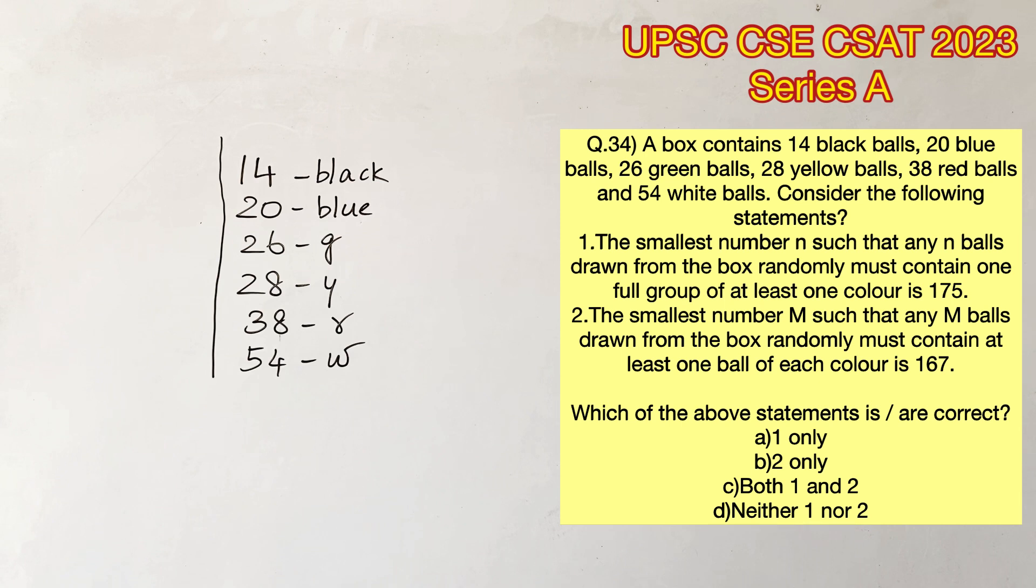So all we have to do is find the worst-case scenario from which, even if you increase the value of n, the condition will always stay true. The worst-case scenario would be that we are getting one less than the total number of balls in every color.